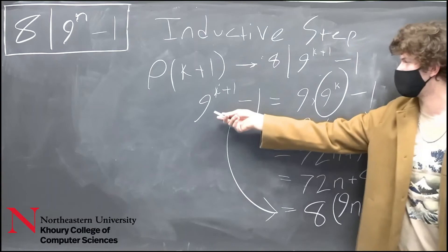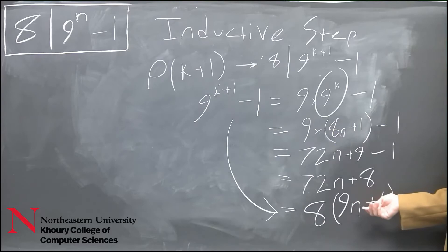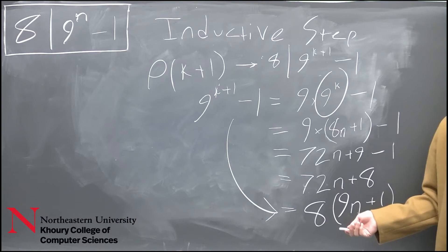This arithmetic proves that 9 to the k plus 1 minus 1 is equivalent to 8 times the quantity 9n plus 1. This will always be divisible by 8 for any integer n that is greater than 0.